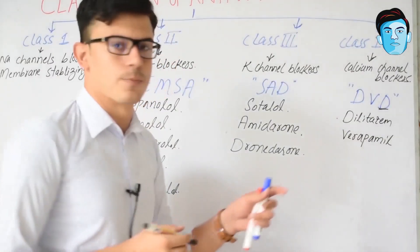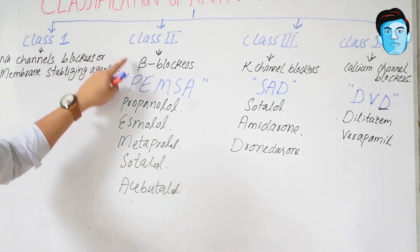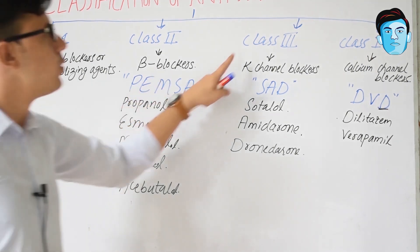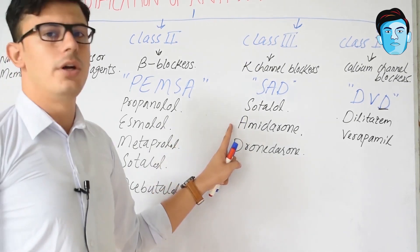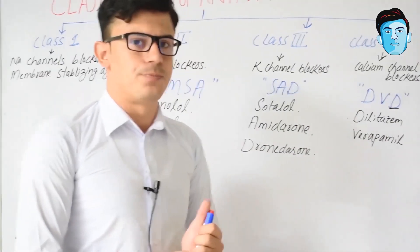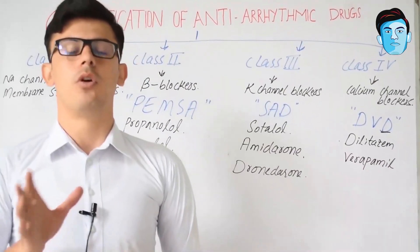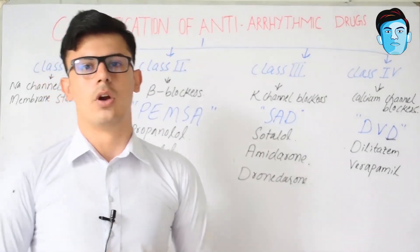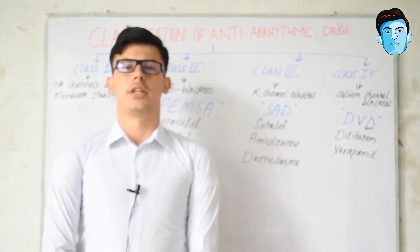To recap: class 1 contains sodium channel blockers. Class 2 contains beta blockers — propranolol, esmolol, metoprolol, sotalol, and acebutolol — mnemonic PEMSA. Class 3 contains potassium channel blockers — sotalol, amiodarone, and dronedarone — mnemonic SAD. Class 4 contains calcium channel blockers — diltiazem and verapamil. Remember that class 1 and class 3 predominantly work on atrial and ventricular arrhythmias, while class 2 and class 4 work more on the SA node and AV node. I hope you liked the video — please subscribe and share.